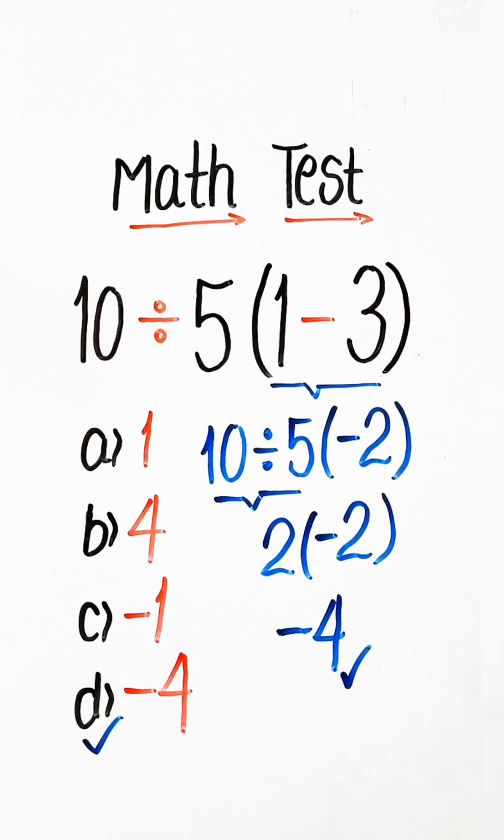So 10 divided by 5 is 2, multiplied by minus 2, giving minus 4. If you like my video please like, share, and subscribe to the channel.